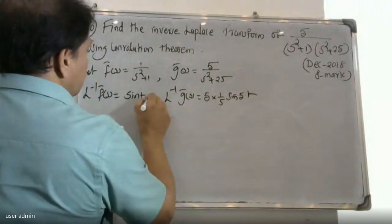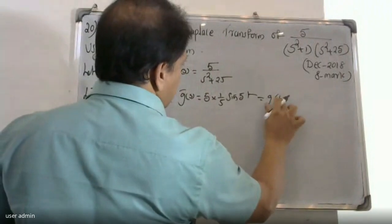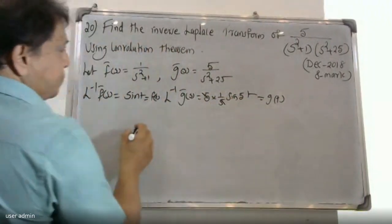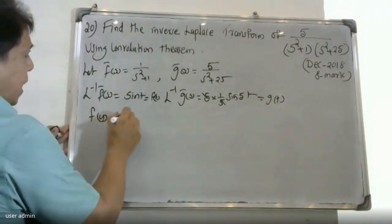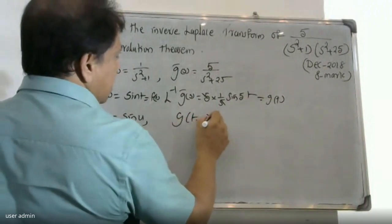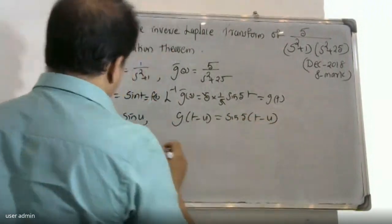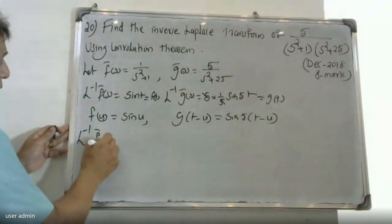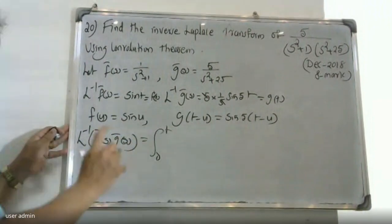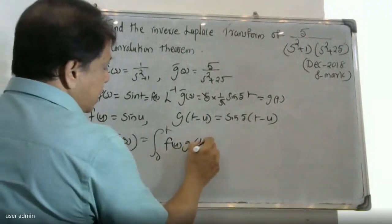This is f(t) and this is g(t). By the convolution theorem, we write the integral from 0 to t of f(u) · g(t−u) du. Here f(u) equals sin(u) and g(t−u) equals sin 5(t−u).